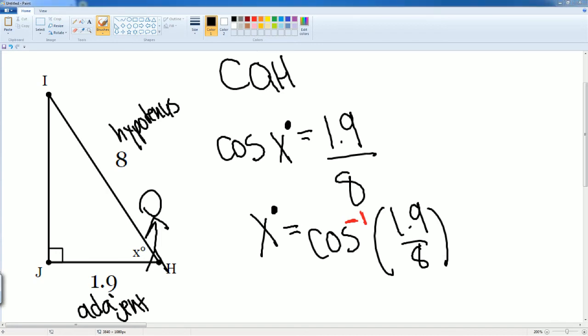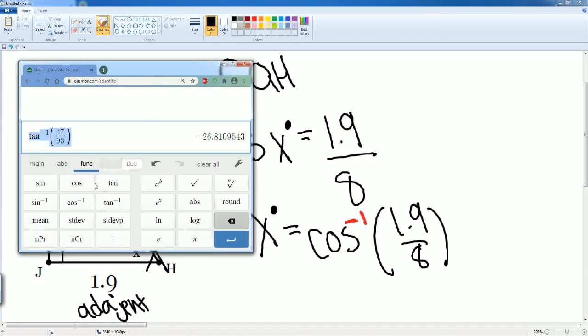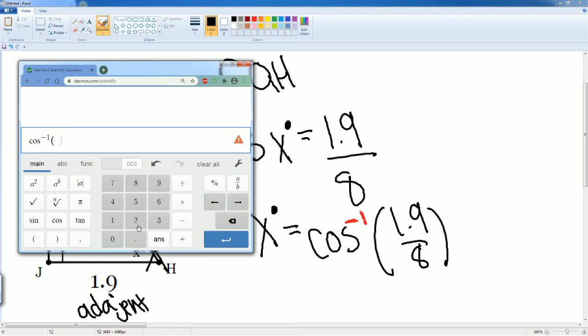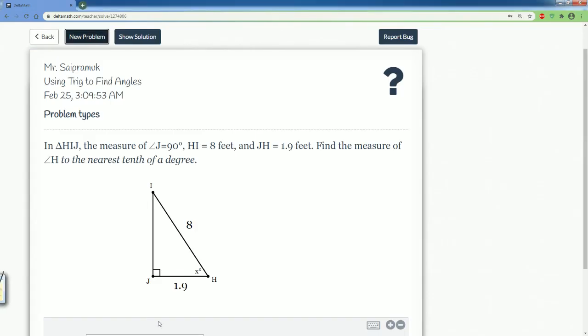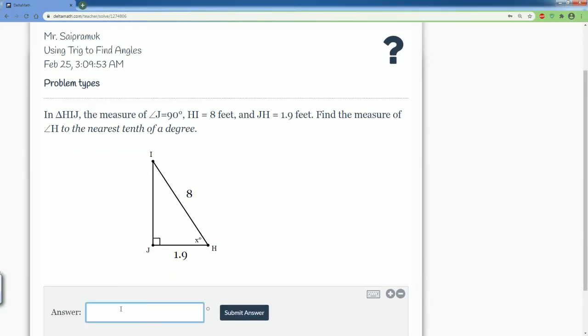So we need to make sure we have our calculator and remember on Desmos scientific, hit the function. Cosine inverse and it is the number 1.9 divided by 8. So the answer here is 76.26. So it is 76.26, but it is 0.26. So we round this up to 3. That is what your angle is. So the angle here is 76.3.